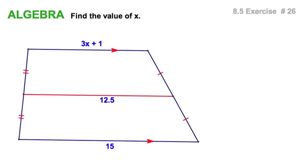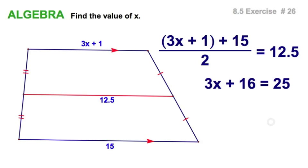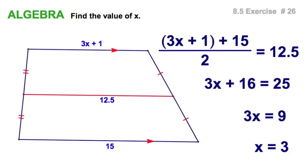We have a mid-segment here and a variable expression on one base. This is just algebra. Remember: base 1 plus base 2 divided by 2 equals the mid-segment. In the numerator I can simplify that to 3x plus 16. I'm going to multiply both sides of the equation by 2 to get rid of that unsightly fraction. Then subtract 16 and divide — just algebra.